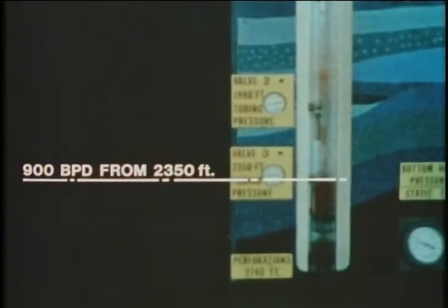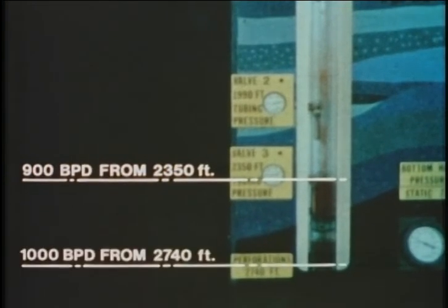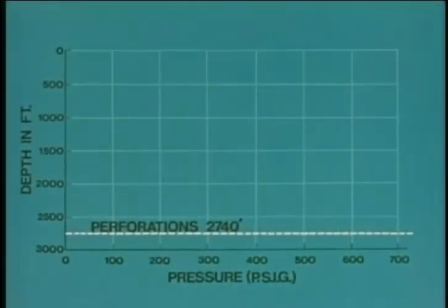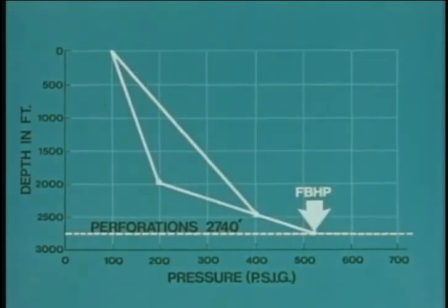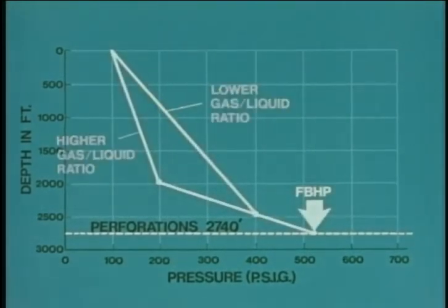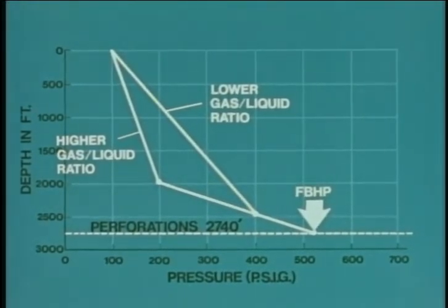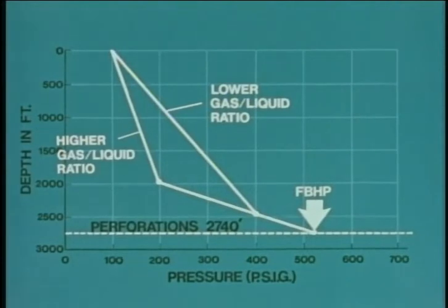From this observation we can state that for any given gas rate, the deeper the point of gas injection, the greater the liquid production will be. This observation also means that the deeper the point of gas injection, the lower is the gas to liquid ratio that is required for a given liquid production rate. However, this conclusion is only valid if the maximum capacity of the well tubing or the surface facilities has not been reached.